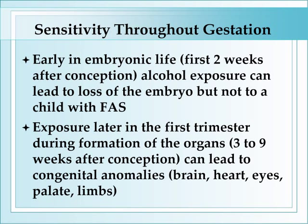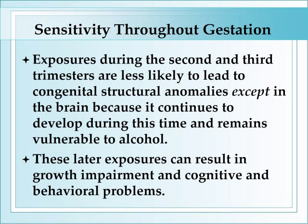Exposure later, but still in the first trimester, during the period of organogenesis — roughly three to nine weeks after conception — is the period during which exposures are most likely to lead to significant congenital anomalies, including the facial structures we recognize in individuals with fetal alcohol syndrome, but also congenital anomalies of the brain, heart, eyes, palate, and limbs. Later exposures during the second and third trimesters are less likely to lead to these types of congenital structural anomalies except in the brain, because brain development continues during this time and it remains vulnerable. These effects primarily manifest in growth impairment and cognitive and behavioral problems, which for most families are among the most significant challenges that they face.